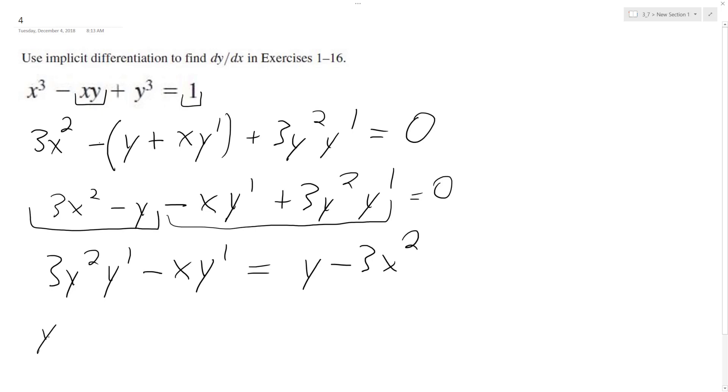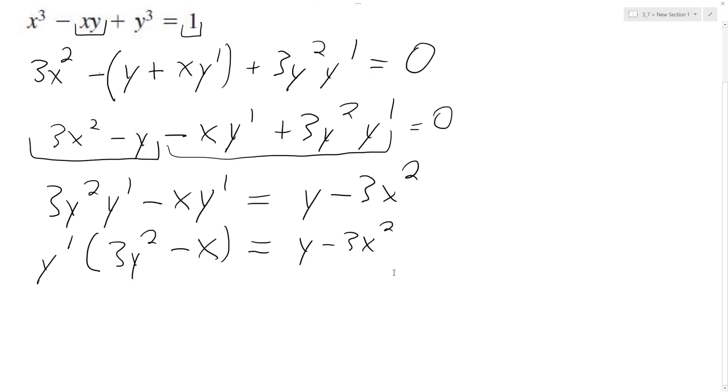So the reason I did that is I get y prime, which is what we want to find, which is dy dx, it's just a shorthand form of representing that, 3y squared minus x equals y minus 3x squared, so finally we get y prime is equal to y minus 3x squared over 3y squared minus x.